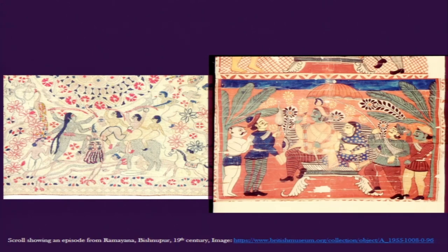In these painted scrolls we also find a particular kind of figuration — the profile view — and how the figures are constructed: not really bony structures, but showing the flesh of the body while also making them relatable and following the kind of body types found predominantly in Bengal and eastern India. For example, this scroll comes from mid-19th century Bishnupur — the same area where we studied Baluchari brocades.